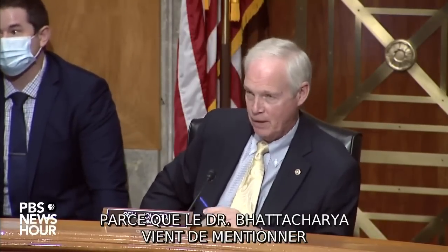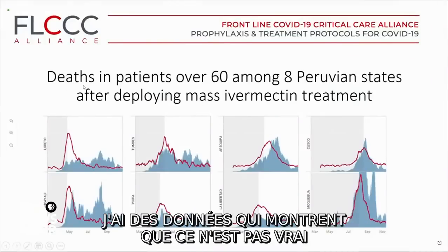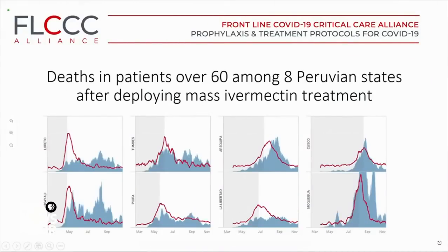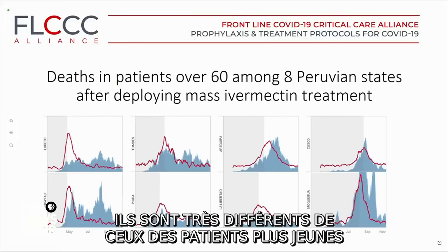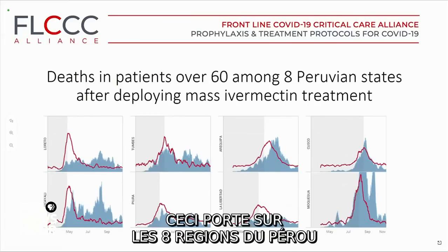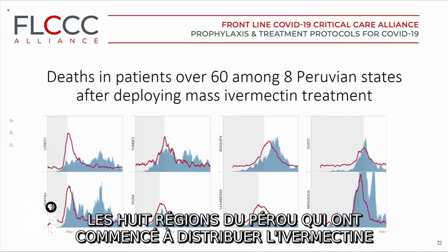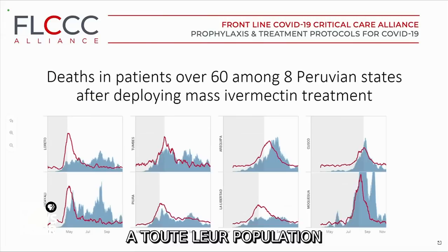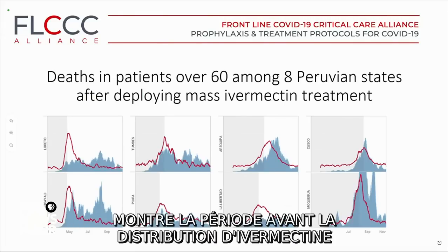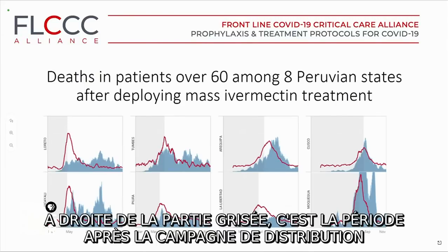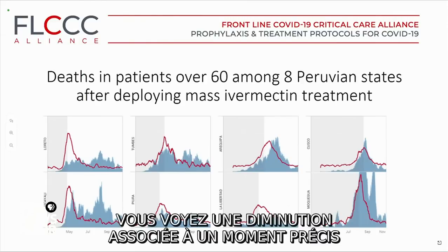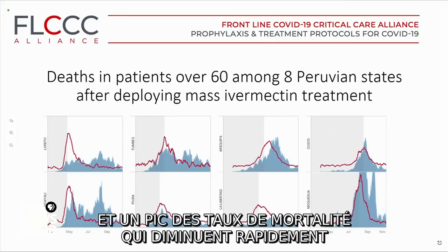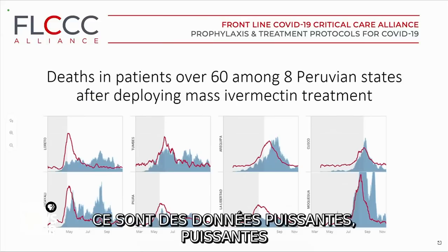Dr. Bhattacharya just mentioned the hypothesis that we're seeing lower rates because of younger populations. I want to show data to demonstrate that's not true. This slide shows only patients over 60 in the eight regions of Peru whose regional health ministries initiated ivermectin distribution campaigns. The shaded area to the left of each graph is before ivermectin distribution; to the right is after. In each of the eight states, you see a temporally associated reduction — a peak in deaths, case counts, and case fatality rates that rapidly decrease to pre-pandemic levels. This is powerful data.